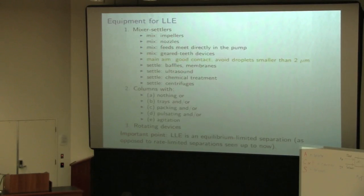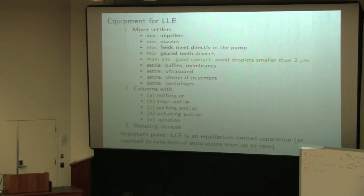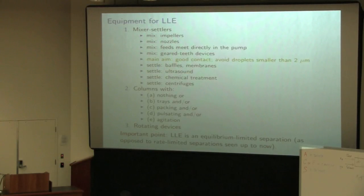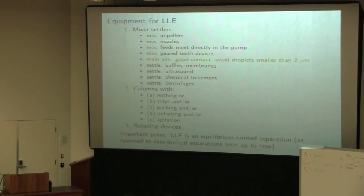Rather than just jump into the ternary diagrams, I think a lot of textbooks tend to do that — they show those diagrams like the McCabe-Thiele diagrams, you draw your zigzags and count your number of stages, and it feels very satisfying. But then we don't really know what these units look like. So let's take a look at what the units look like first, and then we'll understand a bit more what we're doing in those diagrams.